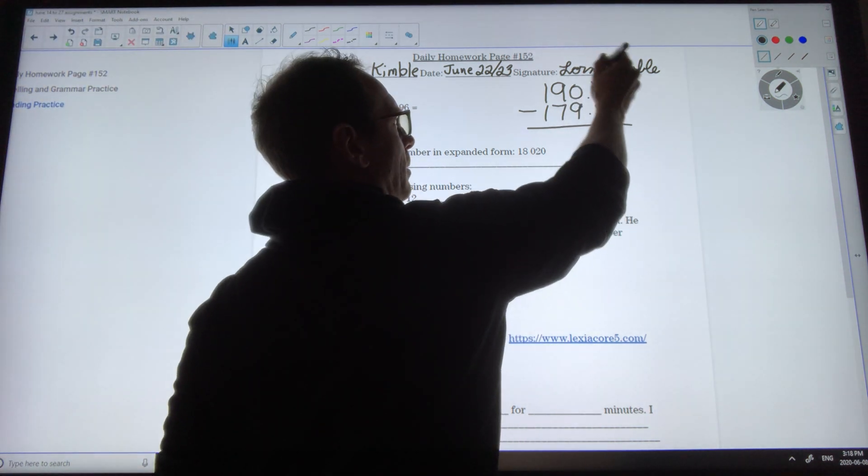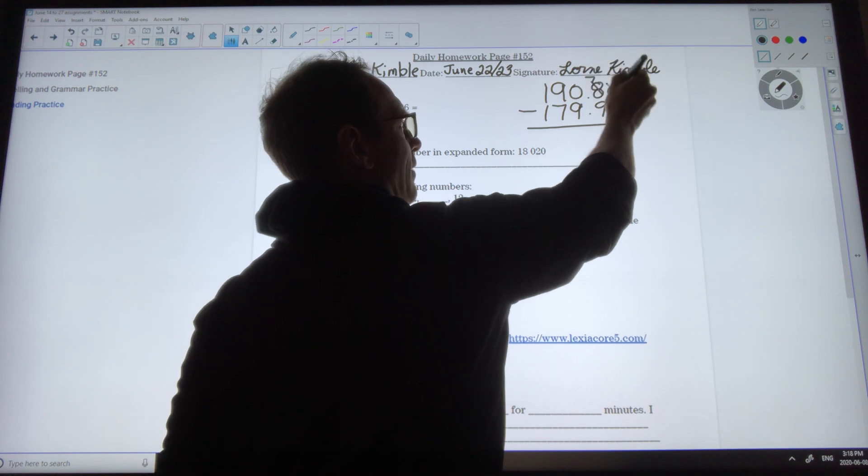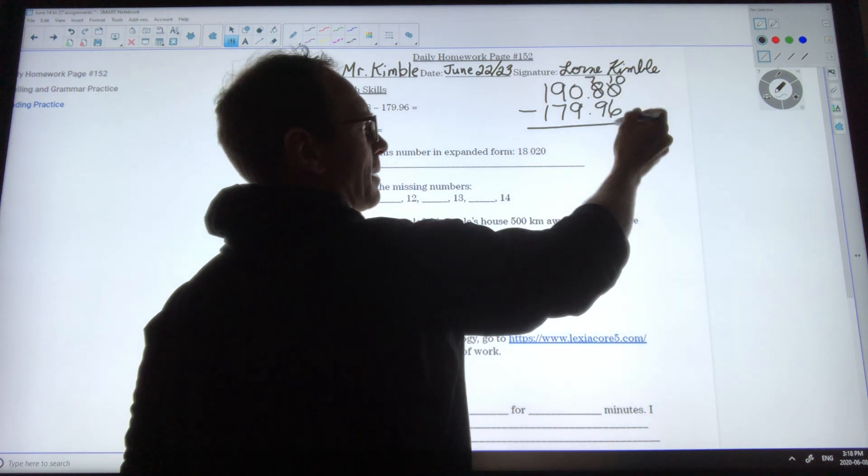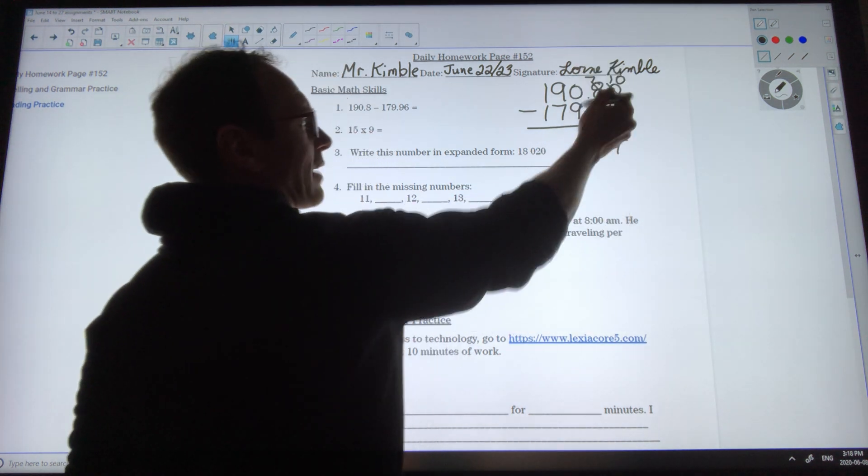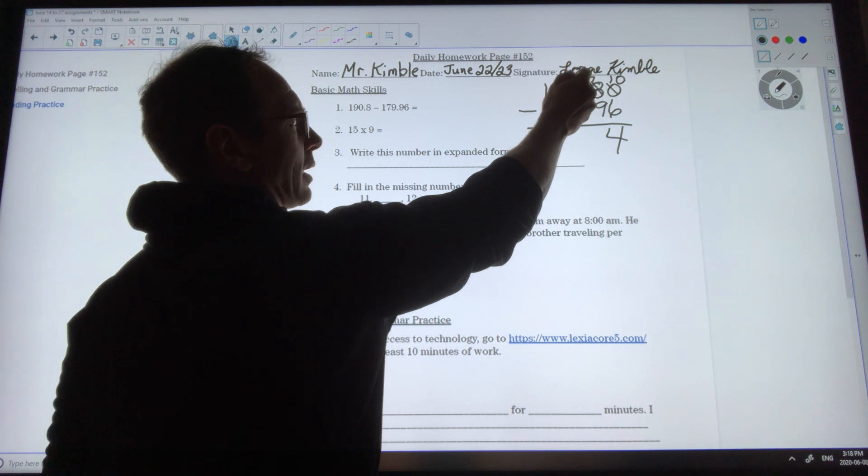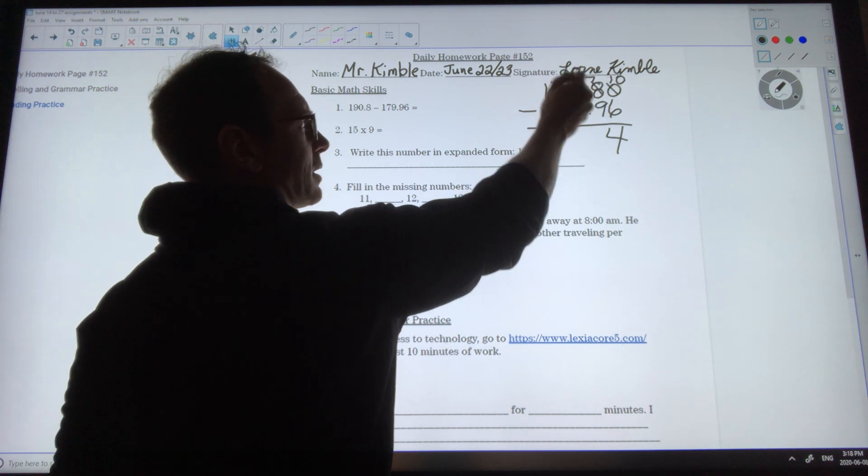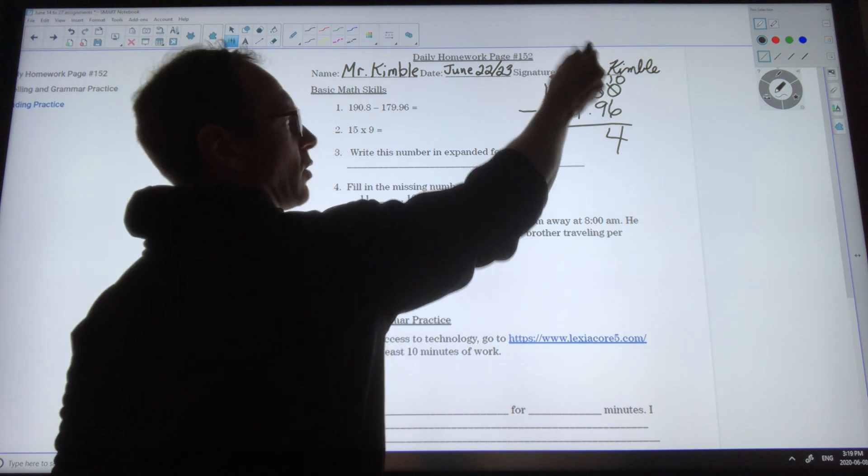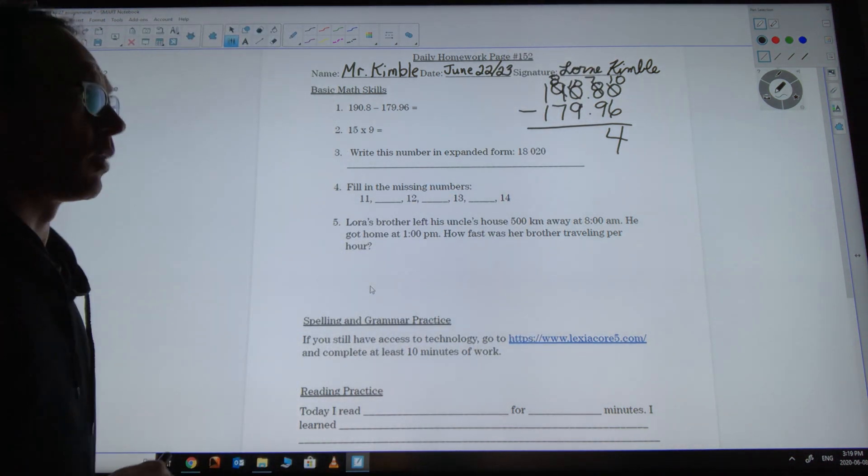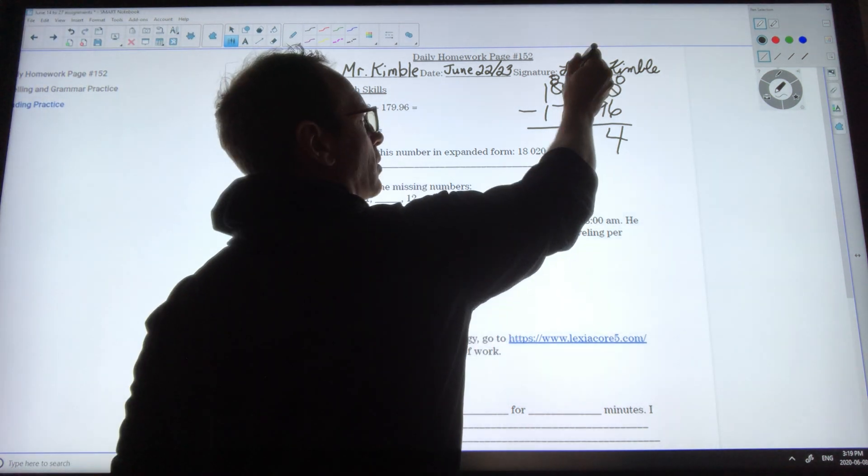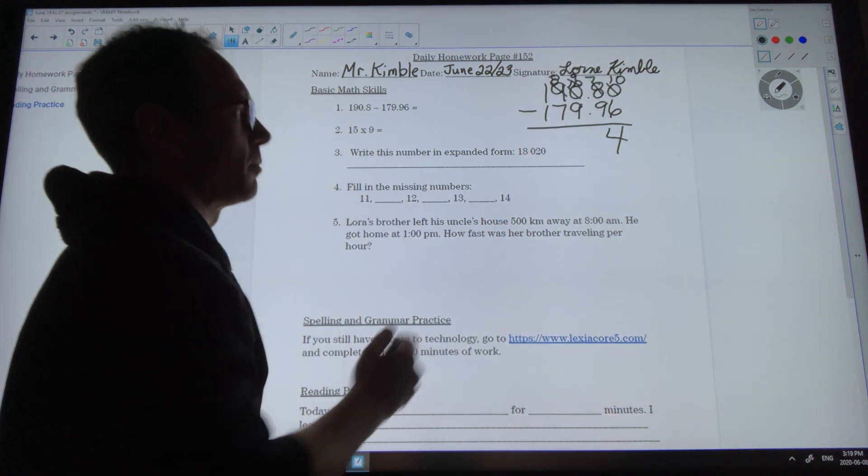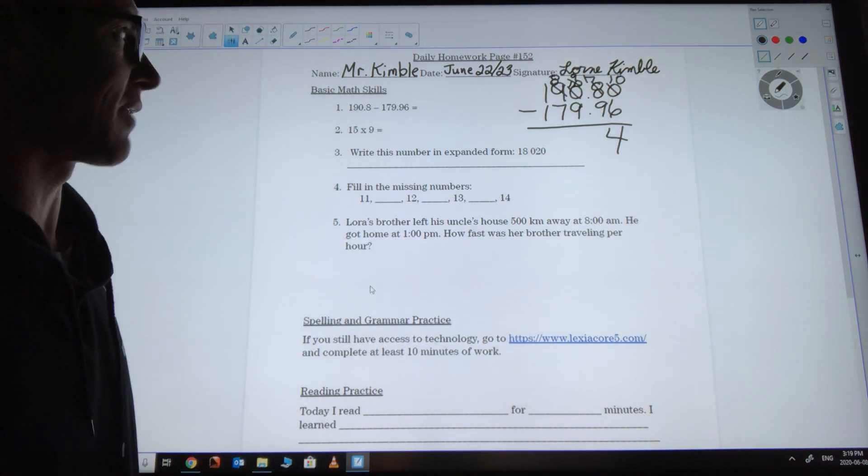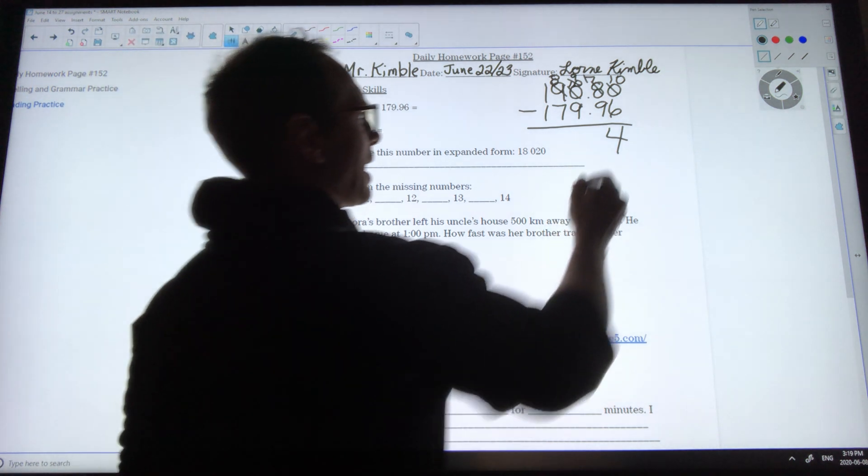To begin with I'm going to have to borrow here, so this becomes a 7 in the tenths place and in the hundredths this will become a 10, so 10 minus 6 is 4. Now I have 7 minus 9 in the tenths so I'm going to do a bit of borrowing. This zero is going to have to borrow first, so this is going to become an 8 in the tens and I'll move that 10 over to the ones place so now there's 10 ones. Then I'm going to take one of those ones and move it over to the tenths place. Now I have 17 tenths or 1 decimal 7. So 17 minus 9 is 8.